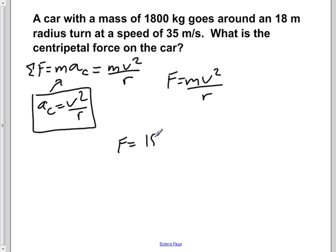So we have a mass of 1,800 kilograms. We have a velocity of 35 meters per second, which we're squaring. And we're dividing by a radius of 18 meters.